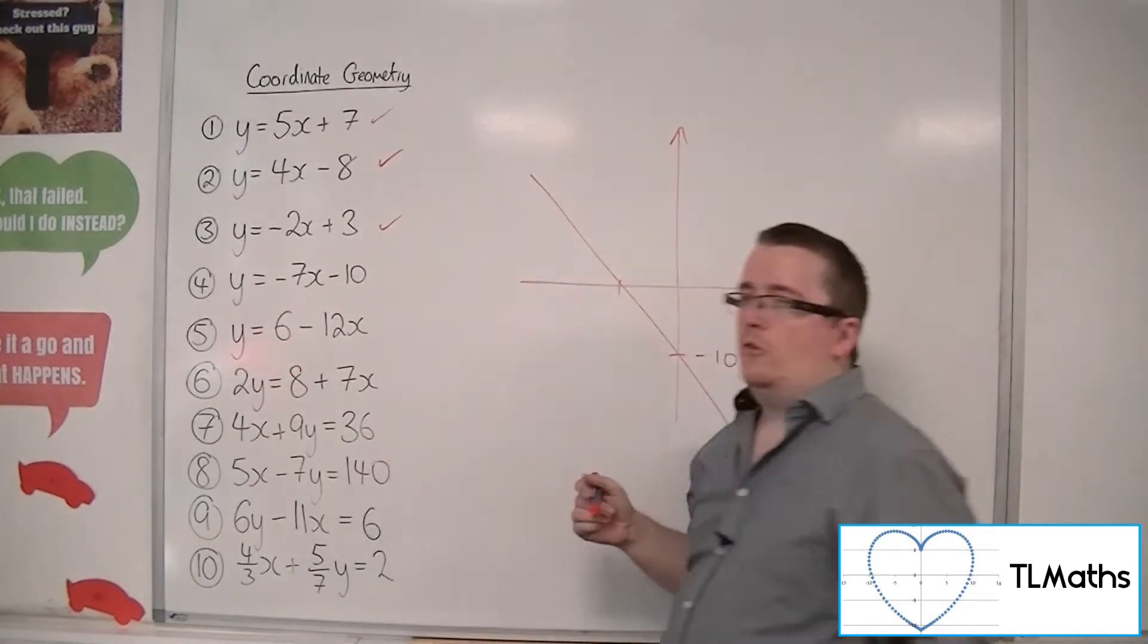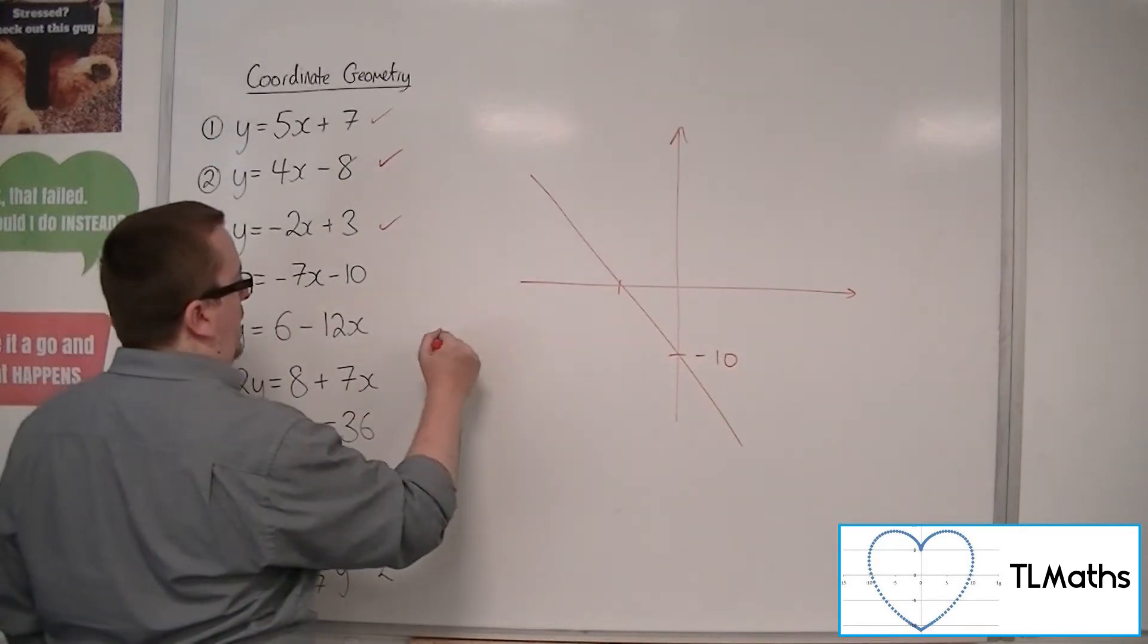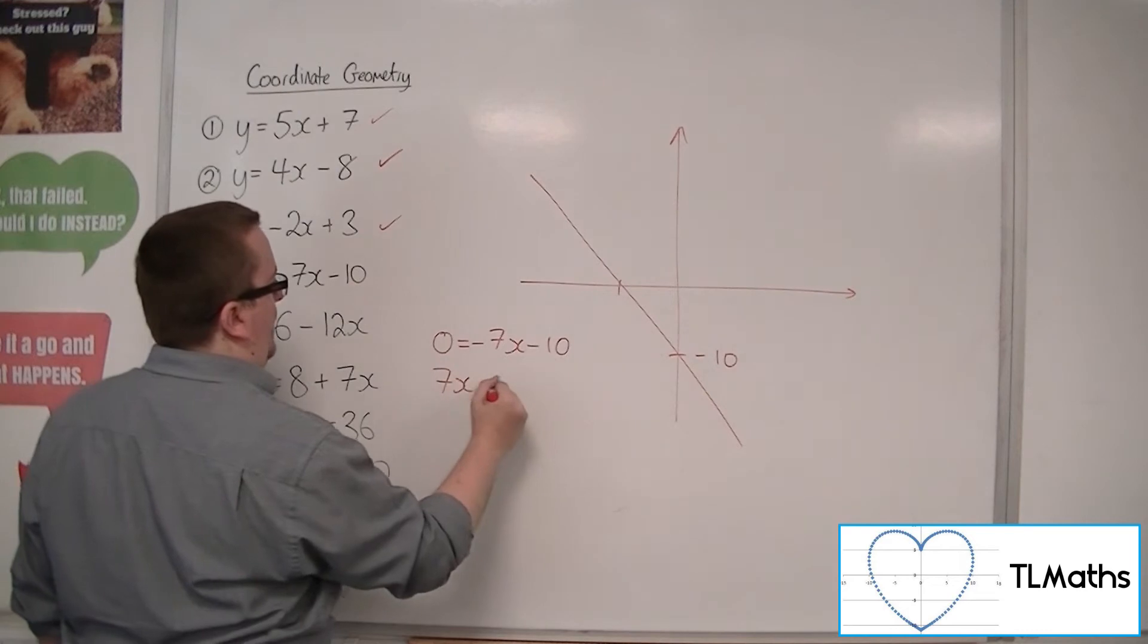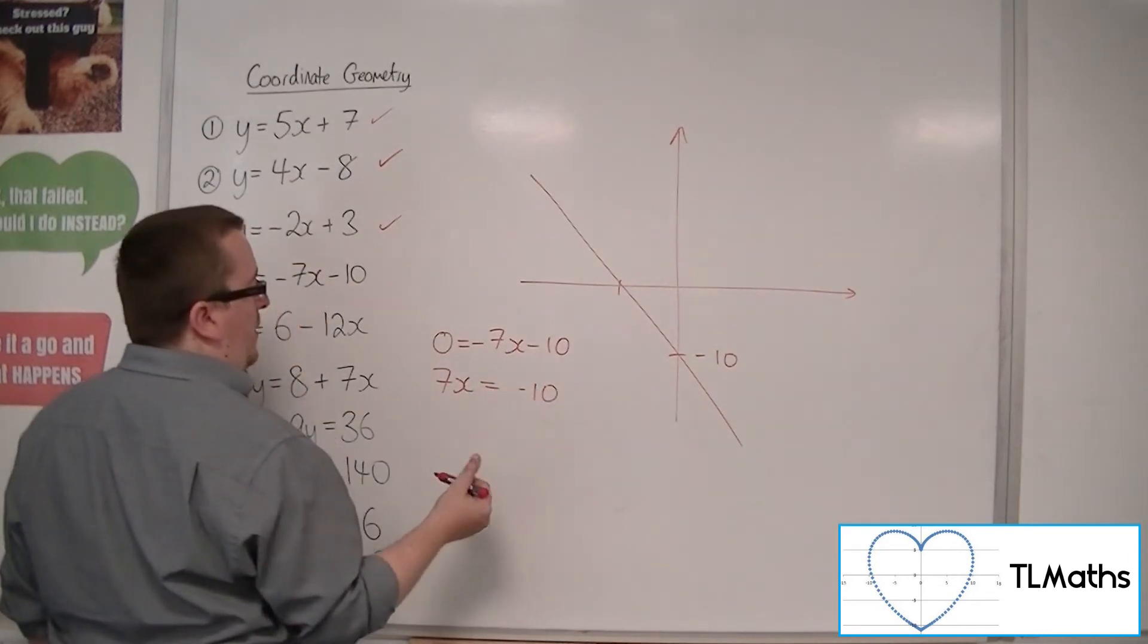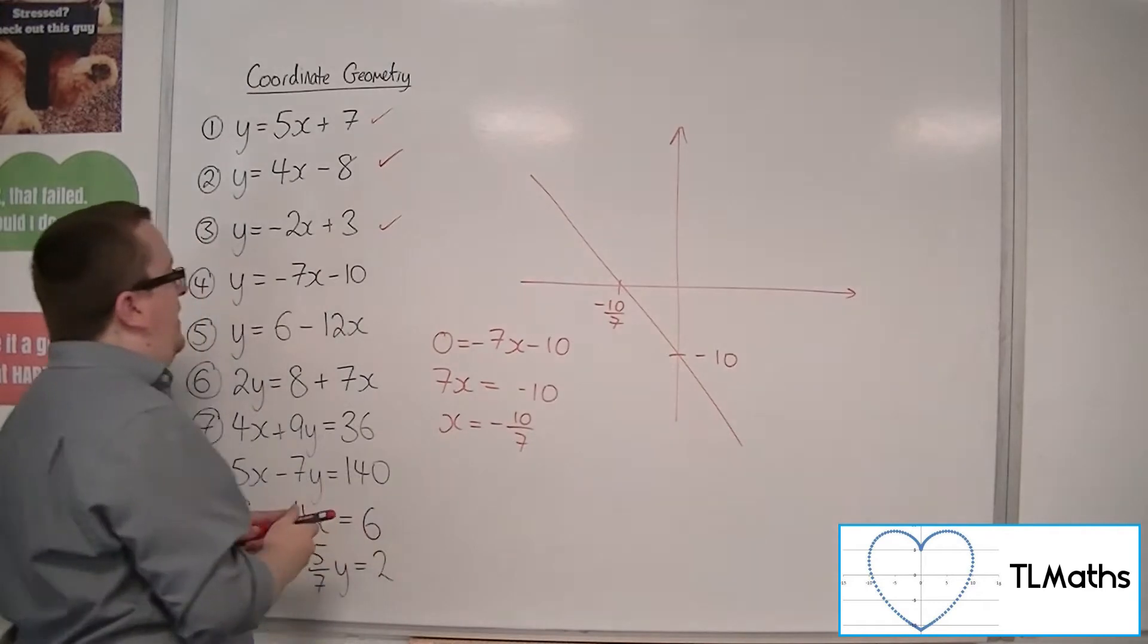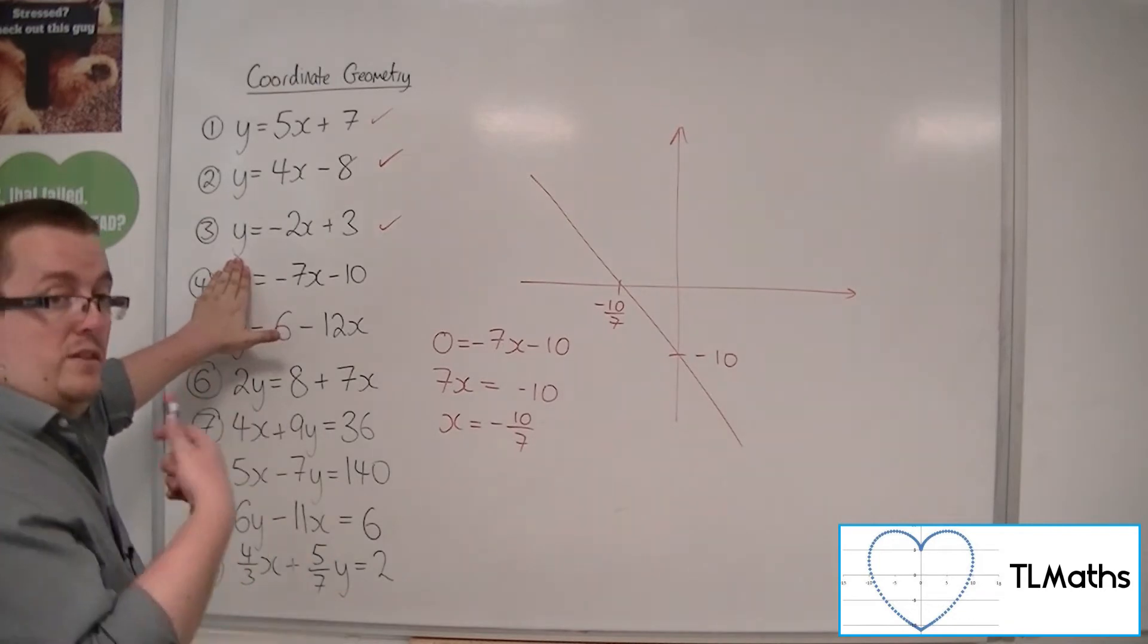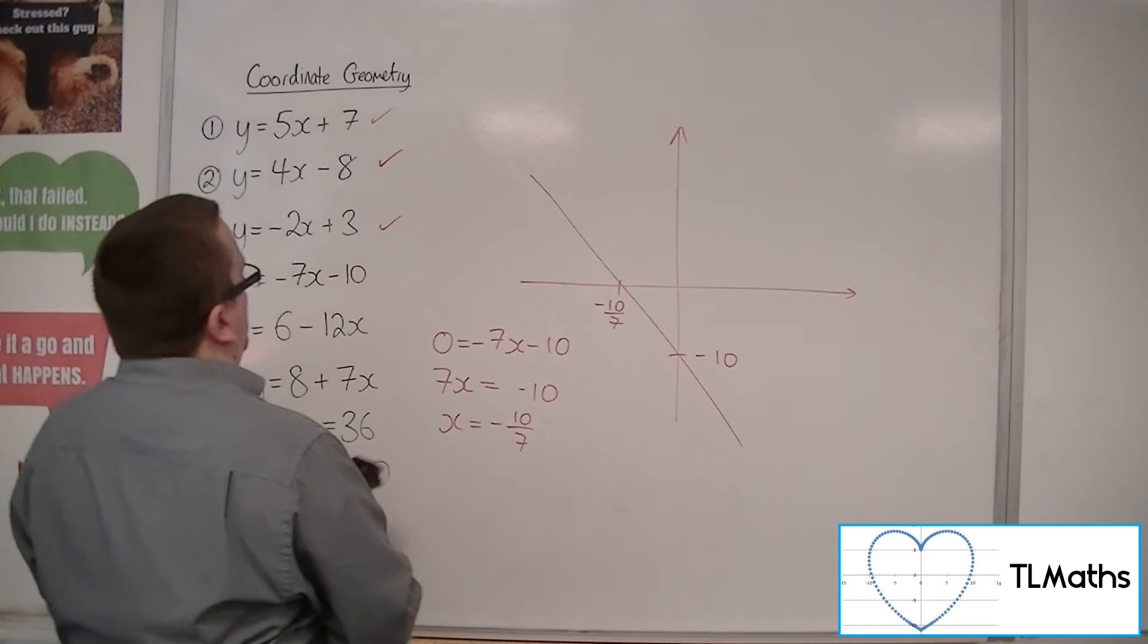I just need to work out where it's crossing the x-axis. Now that's when y is 0. So 0 is minus 7x minus 10. Add the 7x to both sides. And then divide both sides by the 7. So minus 10 sevenths. So you could see that, you know, cover up the y, then add the 7x to both sides. The 7x equals minus 10 divided through by the 7. Okay, so that's that one.